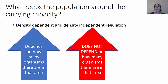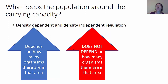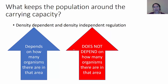The next question is: what keeps the population around the carrying capacity? What is keeping it at that level and not letting it increase or decrease too far? Those are density-dependent and density-independent regulations. Density-dependent depends on how many organisms there are in that area — it will act more if there are more organisms, less if there are fewer. Density-independent regulation does not depend on how many organisms are in that area.